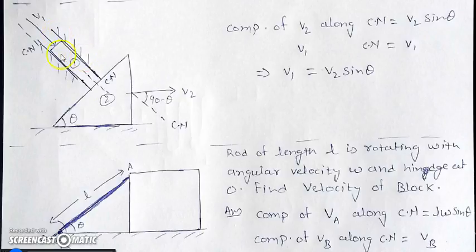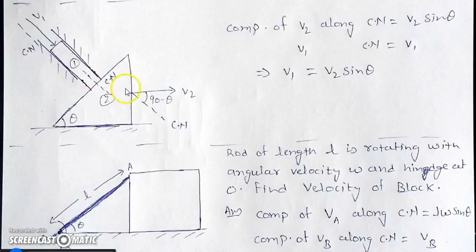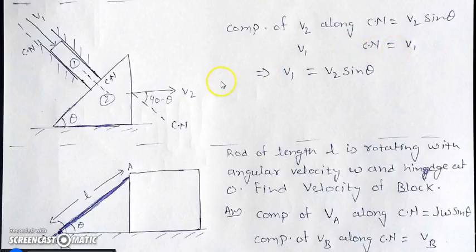In another example, block 1 is constrained between two rails so it can only move vertically, and block 2 rests on the floor moving only horizontally. Block 1 moves with velocity v1 and block 2 with velocity v2. Since v1 is completely along the common normal, its component along the common normal is v1 itself. The component of v2 along the common normal is v2 sin θ. Therefore v1 = v2 sin θ.